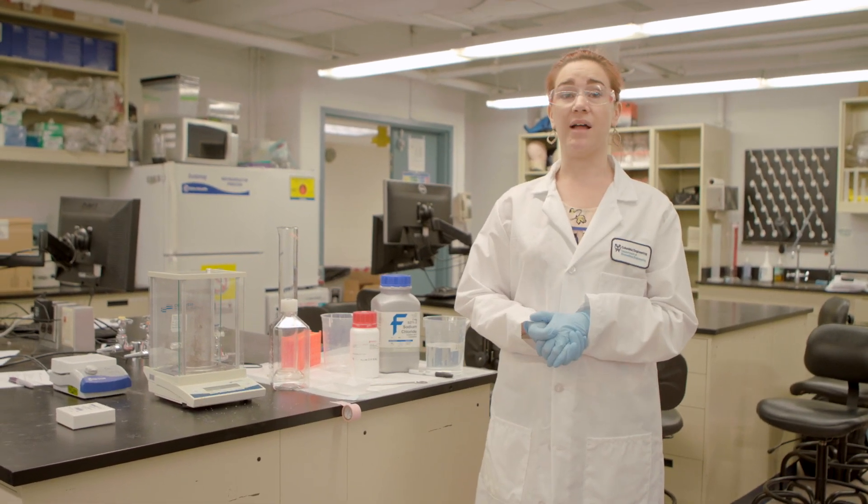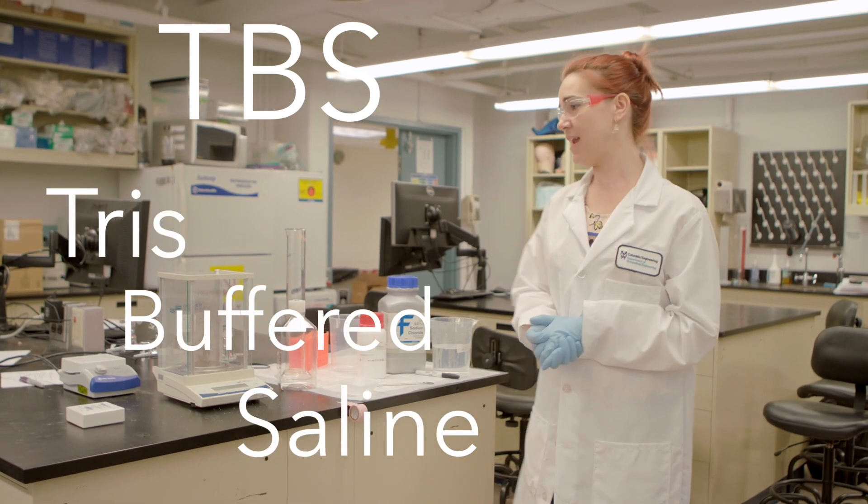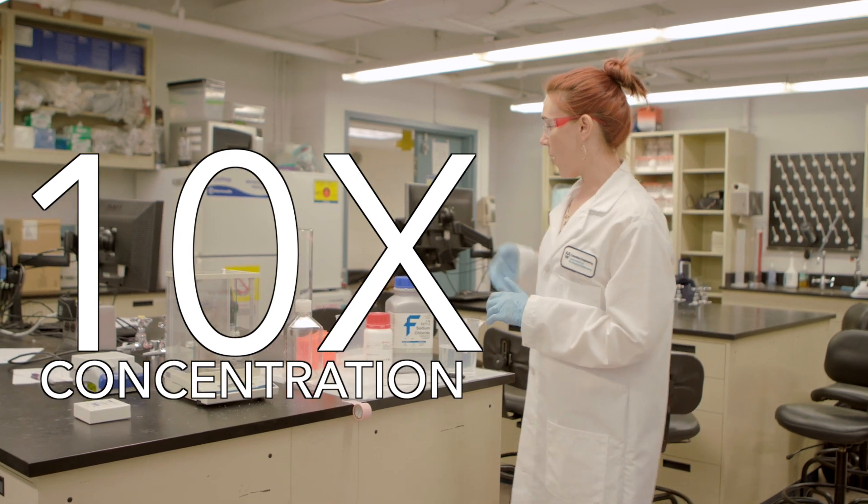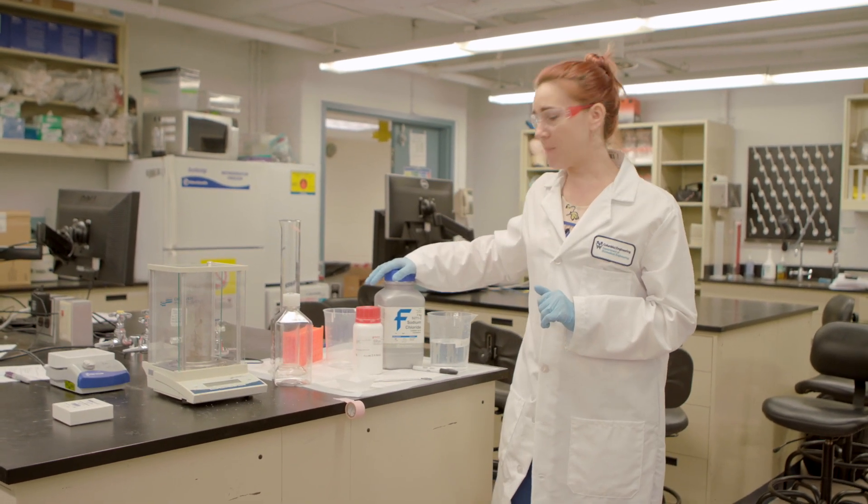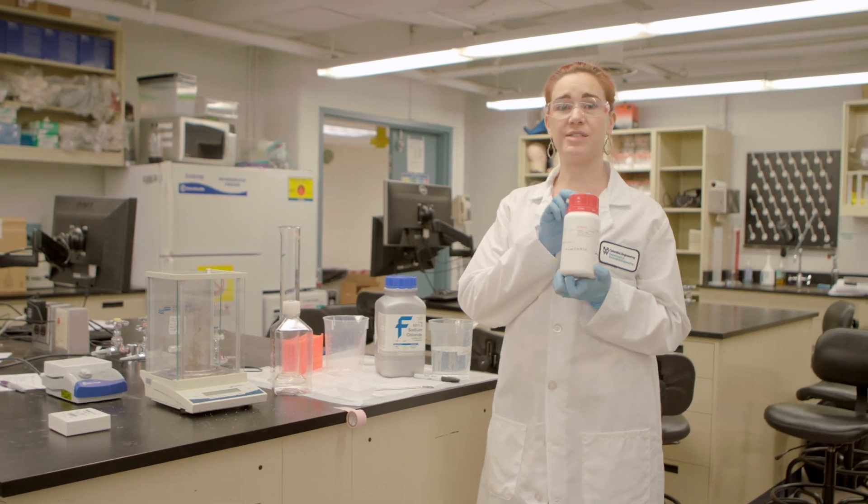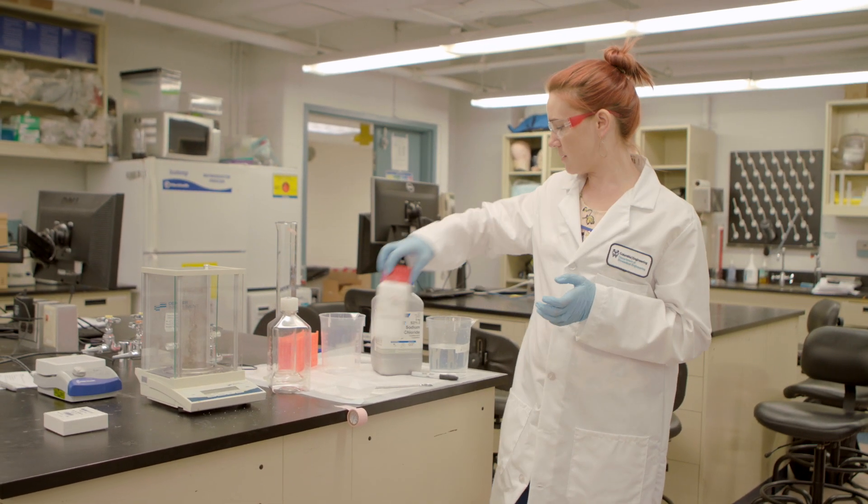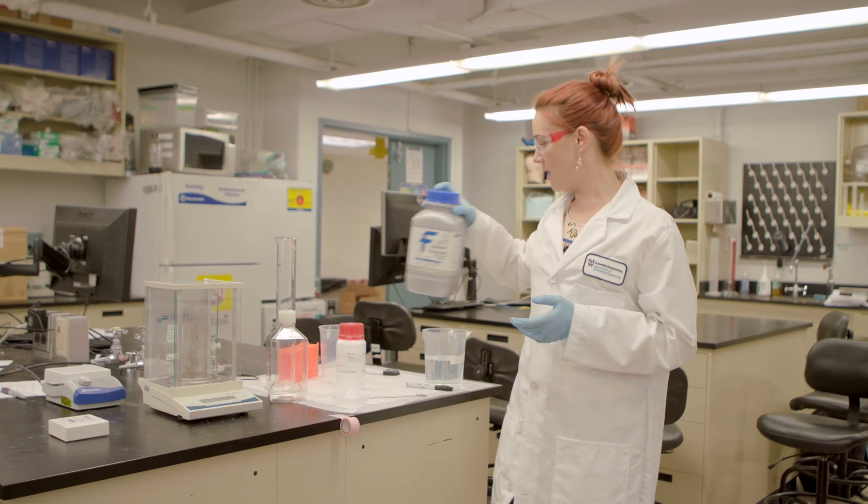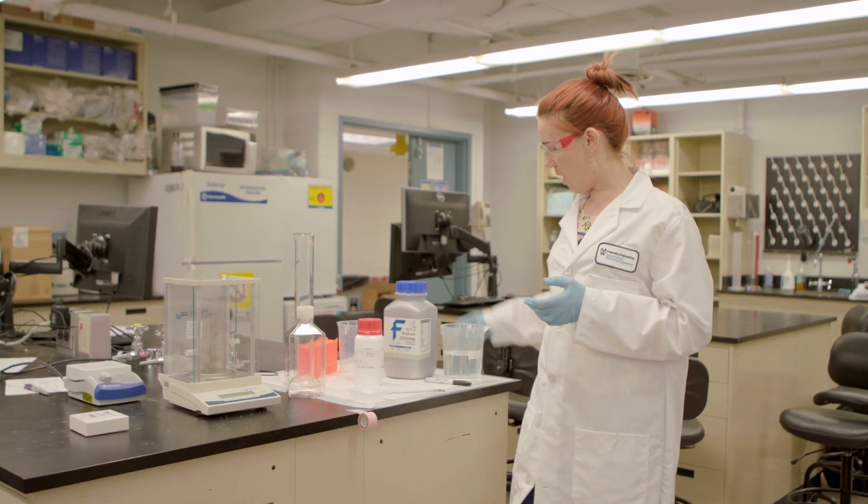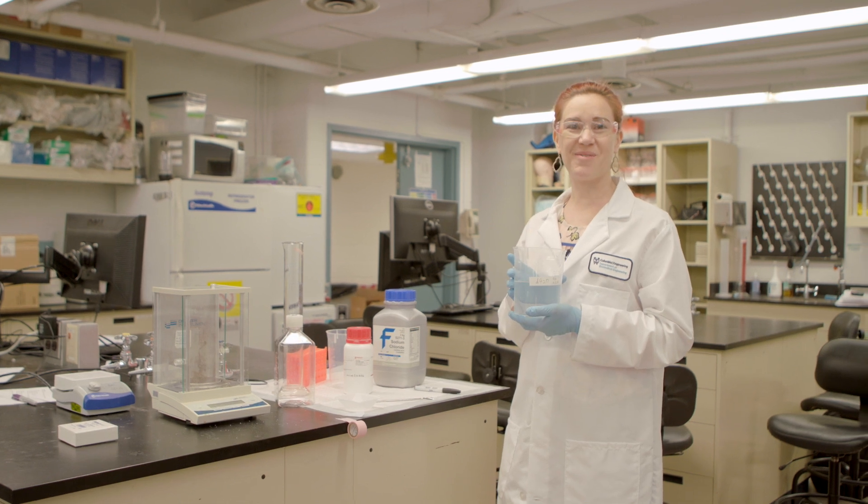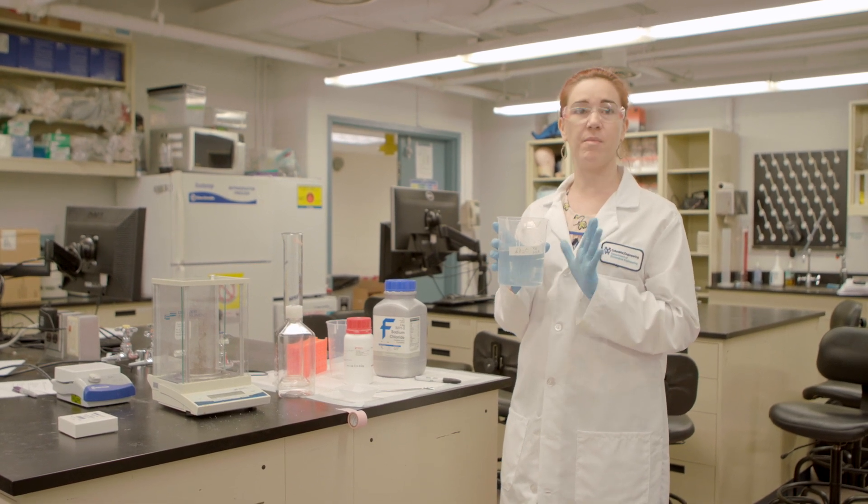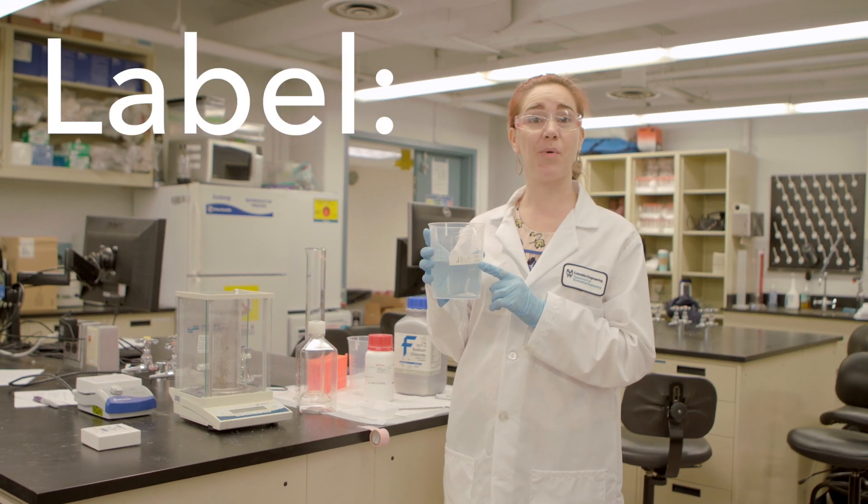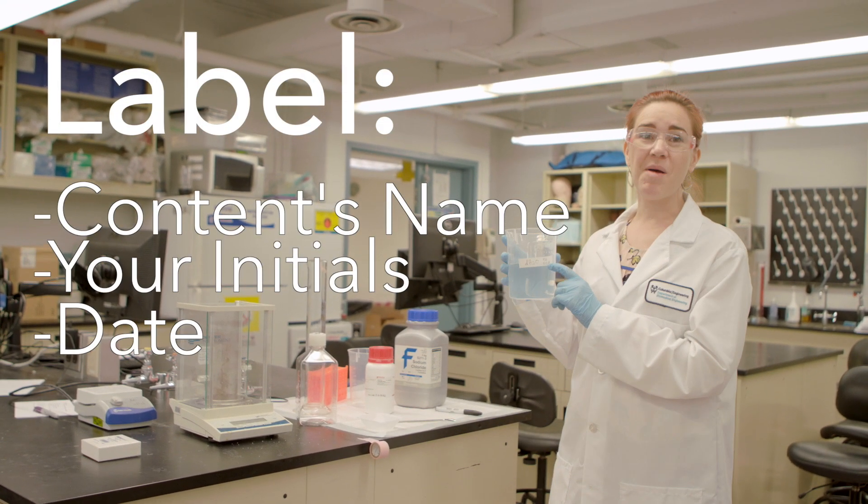We're going to make TBS or Tris Buffered Saline today and we're making a 10X concentration. I know from my protocol that I'm going to need three ingredients: Tris or Trisma Base, NaCl or Sodium Chloride, and Distilled Water. I have my labeled liquid here because it's distilled water and because it's clear liquid in the lab, I open a container and make sure that I have a label with its name and my initials on it.